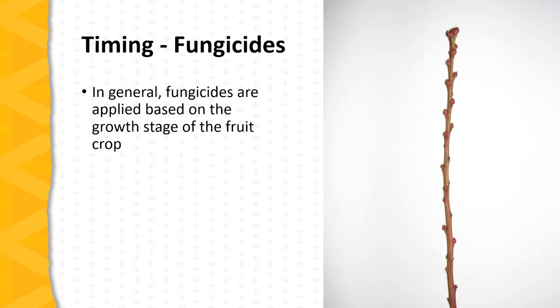Now to discuss timing. In theory, a dormant season application could go on to a fruit plant any time from the cessation of growth in the fall to when buds begin to break and grow in the spring — that's a long period of time, but in reality, timing is much more specific. Many sprays have the potential to damage the actively growing parts of a fruit plant if they're applied too late in the spring. These sprays are most effective when applied before the presence of green tissue or flower buds, which could be damaged by the sprays.